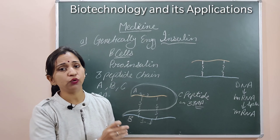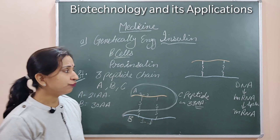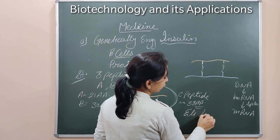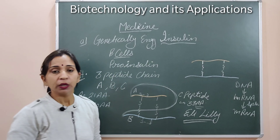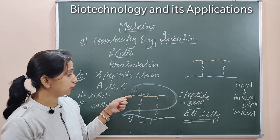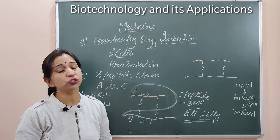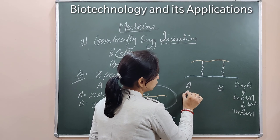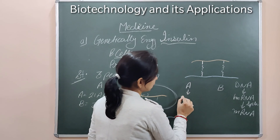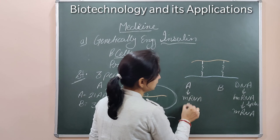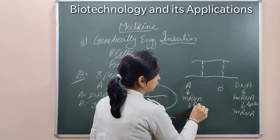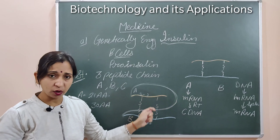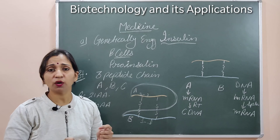So what did the scientists do? How did they produce insulin in bacterial cells? An American company named Eli Lilly isolated the genes for chain A and chain B separately. They transcribed these genes to form mRNA, and then from this mRNA, using the reverse transcriptase enzyme, they formed cDNA — complementary DNA — because the processing enzymes required for splicing are not present in bacterial cells.